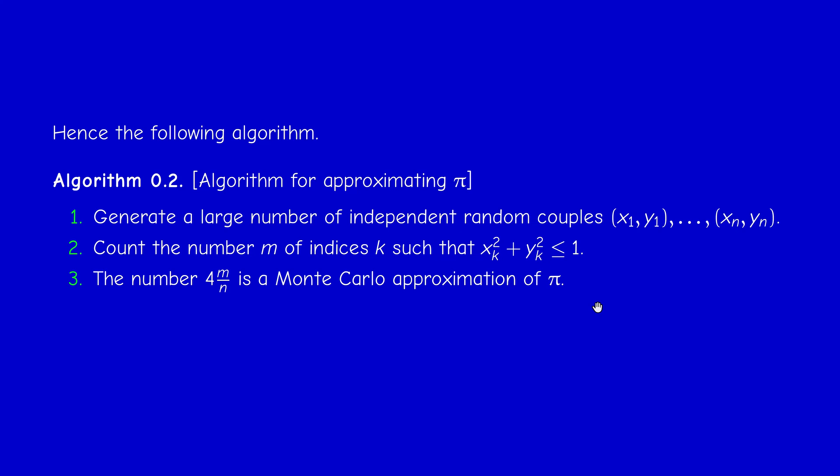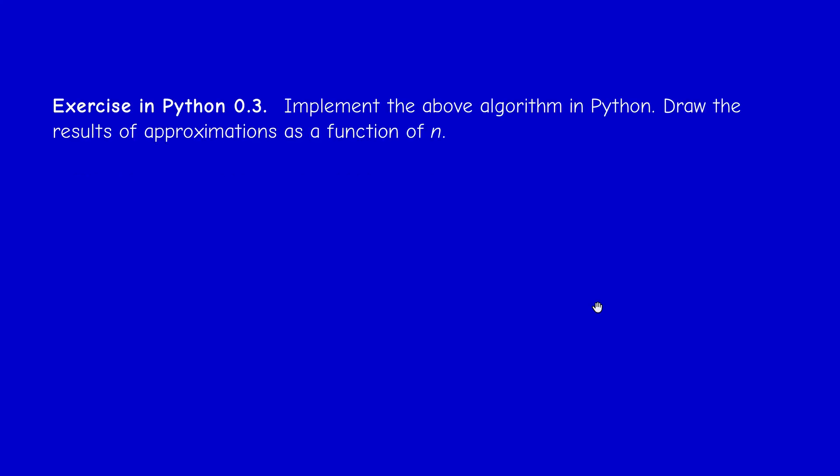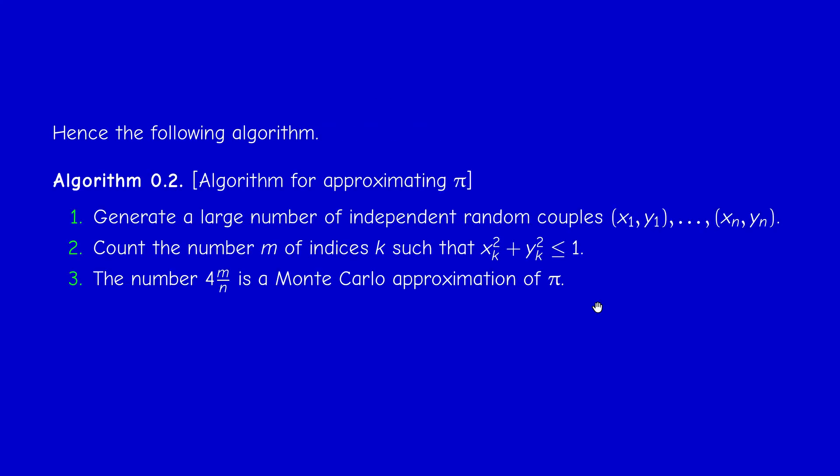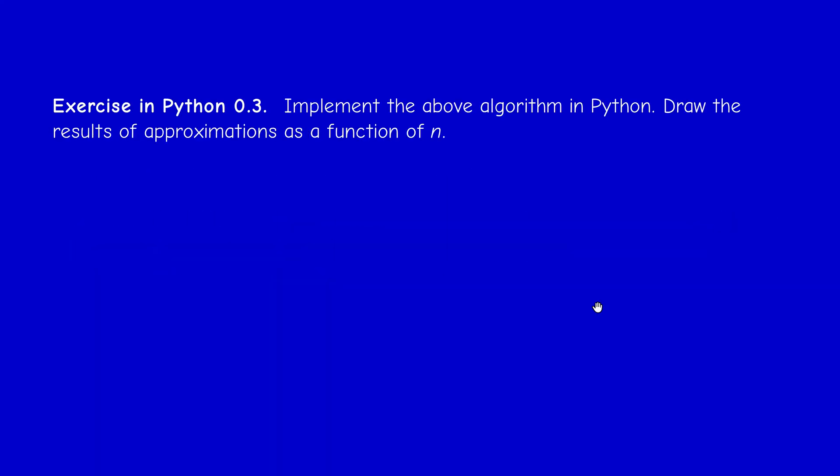Now you will implement this algorithm to approximate π in Python. Take several values of n — one hundred, one thousand, ten thousand, and so on — to see how the approximation behaves. This is just to give you a feel for Monte Carlo approximation of integrals.